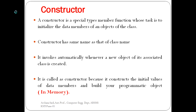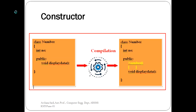A constructor is invoked automatically whenever an object of that particular class is created. The name given to this special kind of member function is 'constructor' because it is used to construct the initial values of the member variables of that class in memory. Constructors can be explicitly written as part of a class, or if the user has not written one, it can be implicitly inserted when the program is compiled.